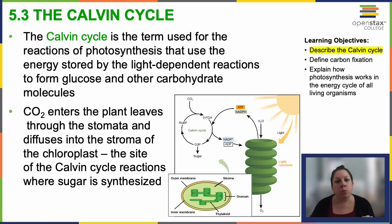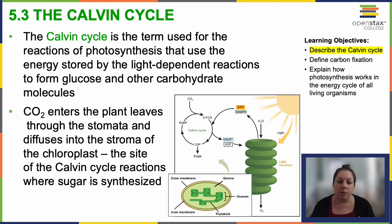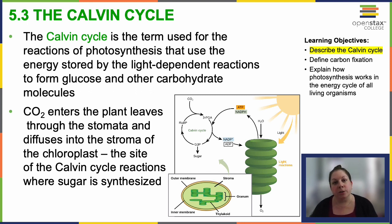Once the solar energy has been transformed into ATP and NADPH and stored, the cell possesses the necessary fuel to create food in the form of carbohydrate molecules. These carbohydrates consist of a carbon atom backbone.